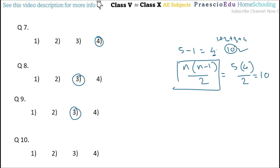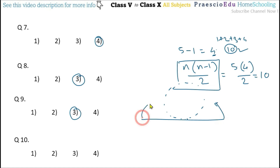Question number ten: a wire of length 8.8 centimeters is bent into a circle. What is the circumference of this circle? Since the wire is bent into the circle with the same length, the length of the wire equals the circumference of the circle. So 8.8 centimeters is the circumference, given in option number two.